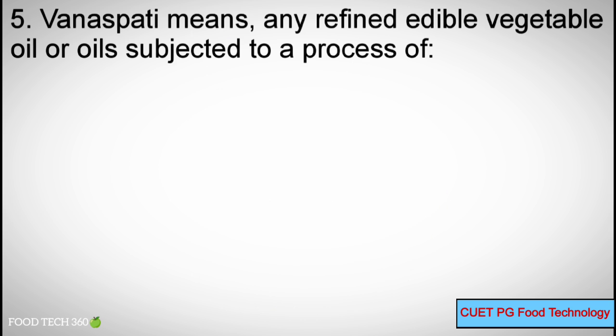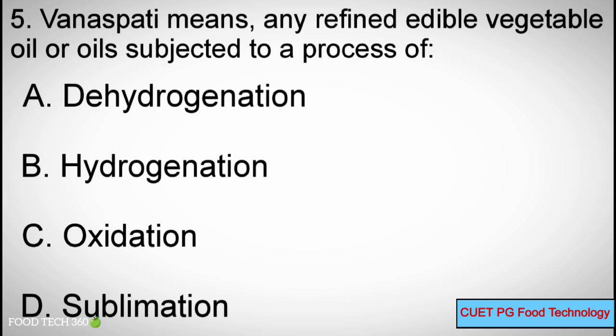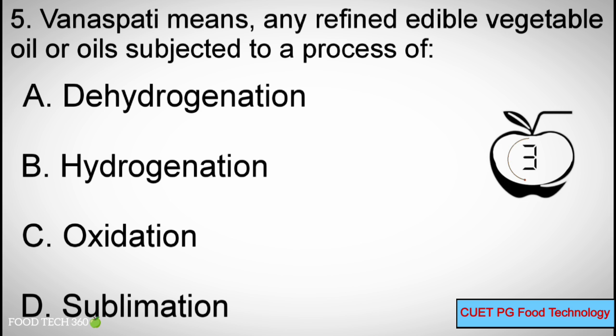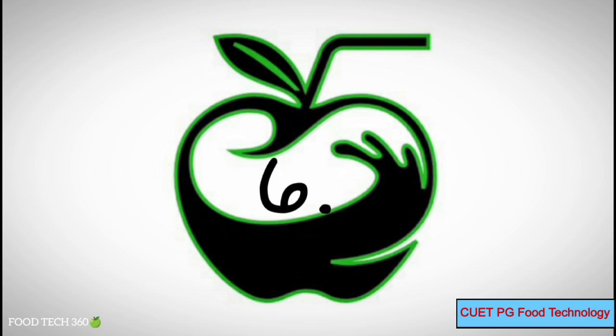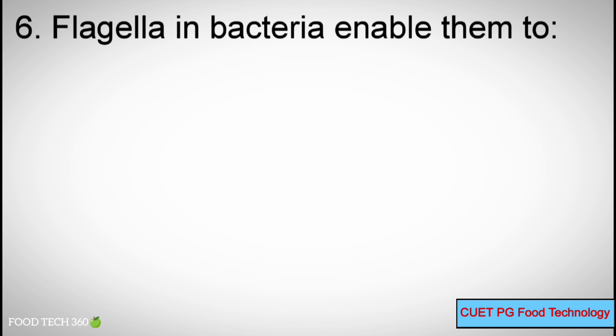Question Number 5: Vanaspati means any refined edible vegetable oil or fat subjected to a process of — Options A: Dehydrogenation, B: Hydrogenation, C: Oxidation, D: Sublimation. Correct answer: B, Hydrogenation.